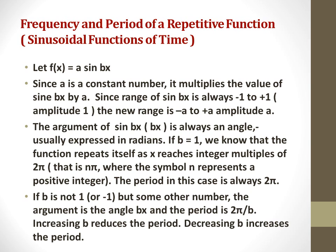If b is not 1 but some other number, the argument is the angle bx and the period is 2π/b. Increasing b reduces the period, decreasing b increases the period.